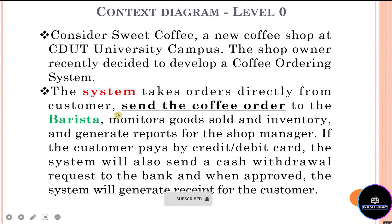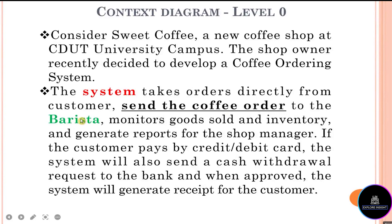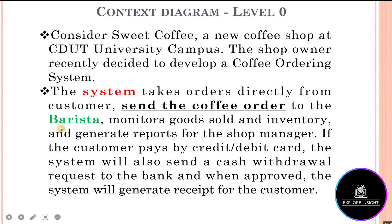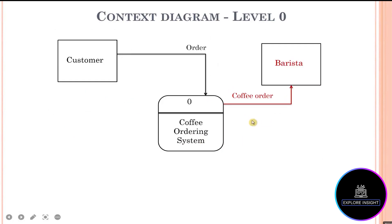Now let's look at the second action. Take note of the comma — it means the system is taking more actions. It says: sends the coffee order to the barista. We retain the process component, and since we don't yet have barista in the diagram, we create a new external entity component named barista. The data flow between the system and barista is 'coffee order' — we eliminate the verb and keep the noun. So the coffee ordering system sends the coffee order to the barista.